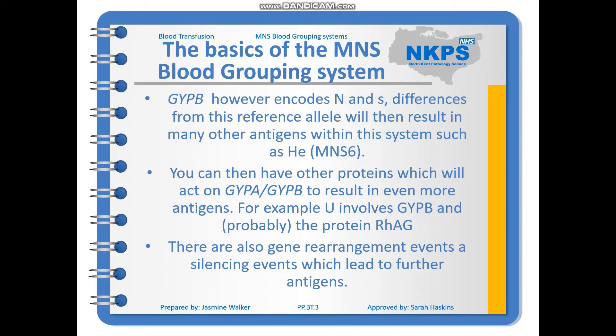GYPB encodes N and little s. Differences from the reference allele will result in many other antigens within the system, such as HE or MNs6. Other proteins can also act on GYPA and GYPB to result in even more antigens — for example, U results from an interaction between GYPB and the protein RHAG. There are also gene rearrangement events, such as silencing events, which lead to further antigens.